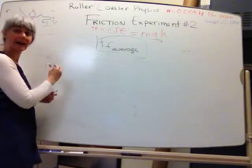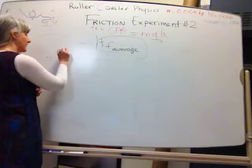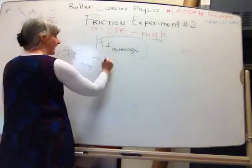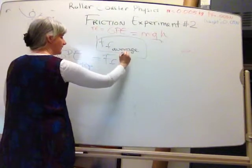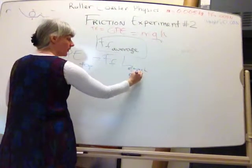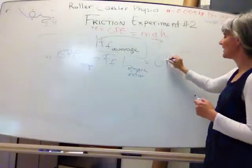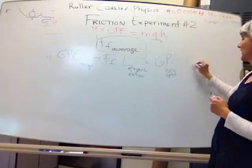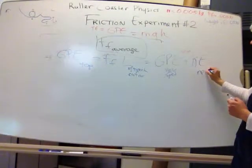I calculated that already. I'm going to use that to find the energy at any spot. So that equation is going to look like the GPE at the top minus the average force of friction times the length of track so far. And that's going to equal the GPE at my new spot plus the kinetic energy of the new spot.